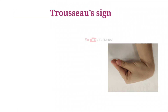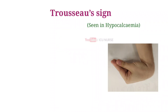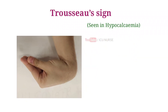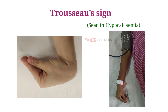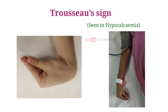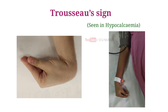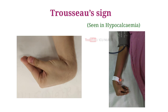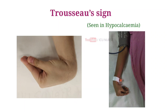Trousseau sign for latent tetany is most commonly positive in the setting of hypocalcemia. The sign is observable as a carpopedal spasm induced by ischemia secondary to inflation of a sphygmomanometer cuff on an individual's arm to 20 mmHg over their systolic blood pressure for 3 minutes. The carpopedal spasm is visualized as flexion of the wrist, thumb, and metacarpophalangeal joints with hyperextension of the fingers.